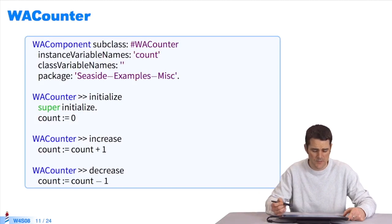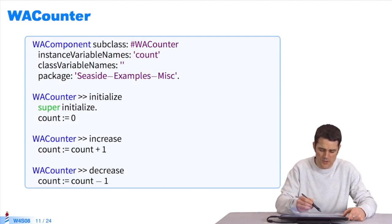The code for implementing this application is very simple. I create a subclass of WA component, WA counter. It has an instance variable named count. The initialization method sets the counter to zero. One method increases the value.